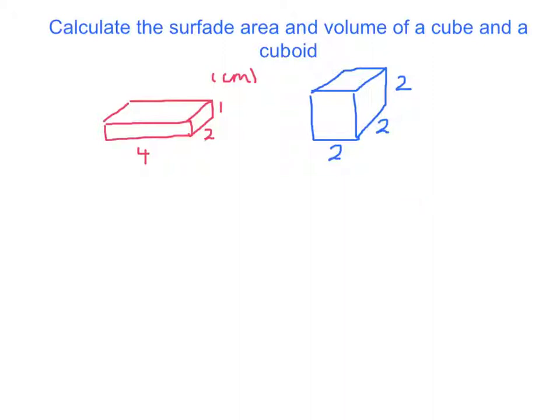I've shortened length to L, breadth to B, and height to H. For the red cuboid, a cuboid is a shape that isn't regular — unlike a cube where every single edge is the same length. A cuboid has edges of different lengths. We can see here that we have a length of 4, a breadth of 2, and a height of 1.